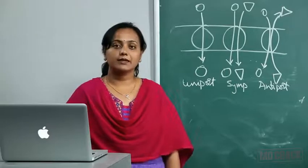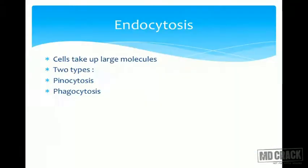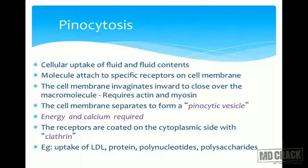There is also transport of macromolecules, for which we have endocytosis and exocytosis. These are the ways by which cells absorb large molecules, such as by phagocytosis or pinocytosis — taking up fluid, bacteria, or viruses. These processes are energy- and calcium-requiring and result in formation of a vesicle that takes up the molecule.